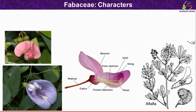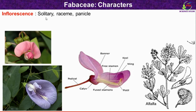Now we will see the floral characters of Fabaceae family. Various members show variation in inflorescence. Some members show solitary inflorescence, and some show raceme type inflorescence — as seen in alfalfa, where older flowers are at the base and younger flowers are at the apex. Panicle type inflorescence is also seen in Dalbergia, and axillary head type inflorescence is found in Trifolium.